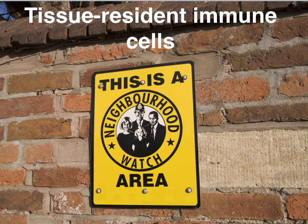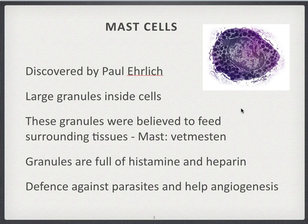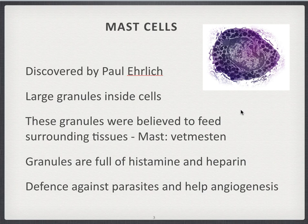I'm going to talk about three types of cells: mast cells, macrophages, and dendritic cells. First of all, mast cells. Mast cells were discovered by Paul Ehrlich. He discovered them because after a staining he did, he saw these large granules inside. He believed these granules were there to feed the surrounding tissue, so he called them mast cells because 'mast' means to feed in German. Later they found out that these granules are actually full of histamine and heparin, and induce inflammation and can kill parasites when they are exocytosed — thrown out of the cells.